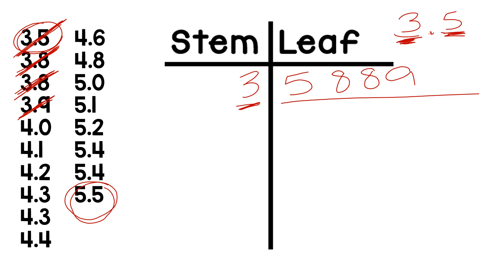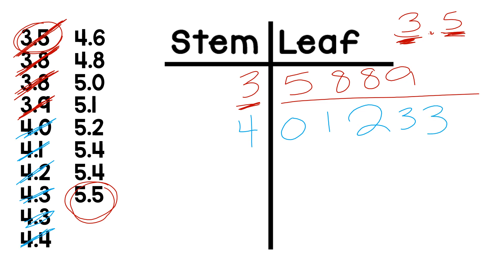Now I'm going to go to my next row — numbers with a four in the stem. I see four and one tenths, four and two tenths, four and three tenths, four and three tenths, four and four tenths, four and six tenths, and four and eight tenths. All of these numbers in this row have a four in the stem.